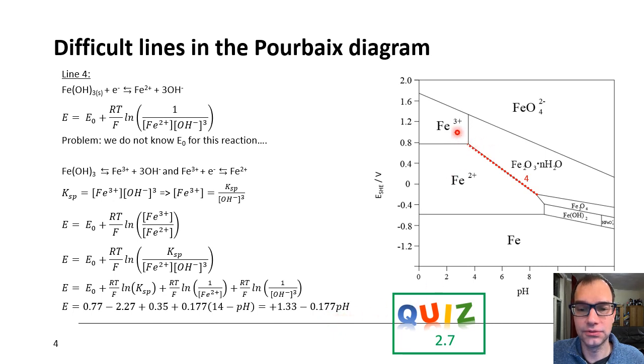So, if you would plot this line, you would see, indeed, it's about 1.33 where it hits the y-axis. So, it's in line with what we see here. But you see, it takes a bit more effort to come to the right equations for these lines that are not straight.